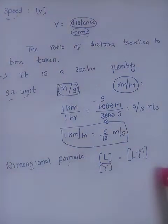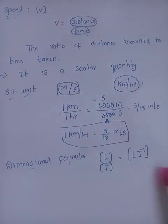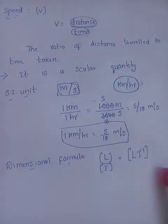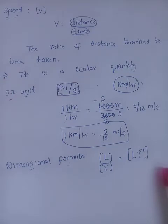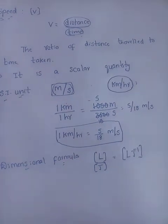We defined speed as the ratio of distance travelled to time taken. A doubt arises: can I move with the same speed throughout my entire journey? No — somewhere we stop, so at that time our speed is zero, and somewhere we move with maximum speed. What we calculated — total distance travelled divided by time taken — is called average speed. If I move with the same 60 km/h from start to finish, that is called uniform speed. There are different types of speed.